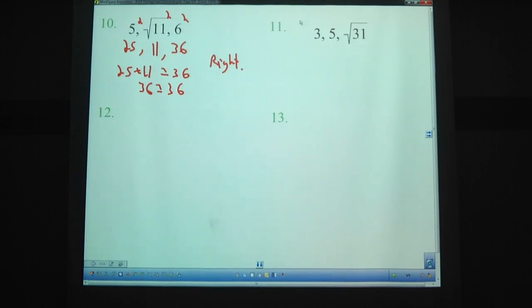Let's look at 11 here. 3, 5, and the square root of 31. So let's square all three of those. 3 squared is 9. 5 squared is 25. Square root of 31 squared is 31. So now we can see which one's biggest, the 31 is. That's good at the end of the equation. So 9 plus 25 equals 31. And 9 plus 25 actually equals 34. So those are not equal. So that is not a right triangle.